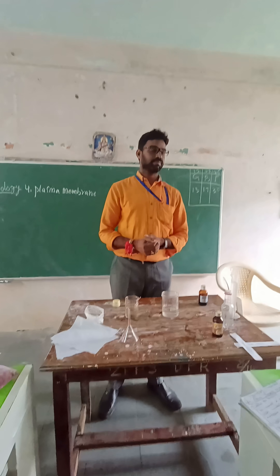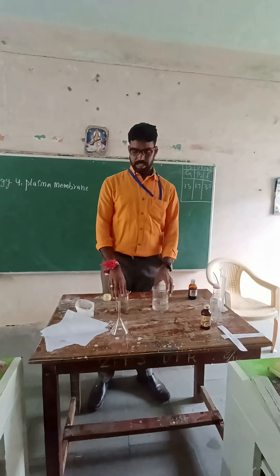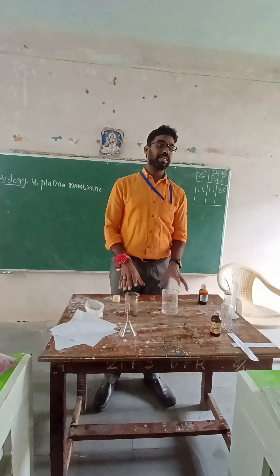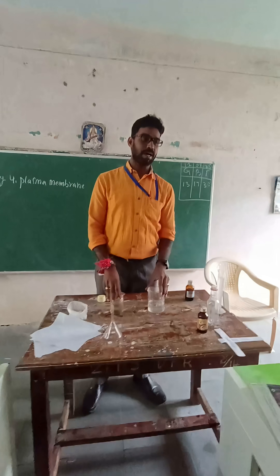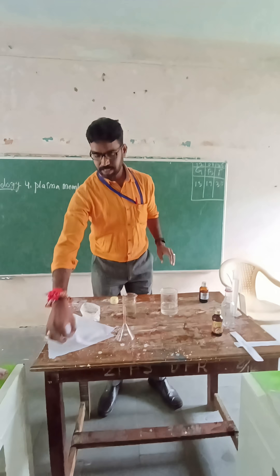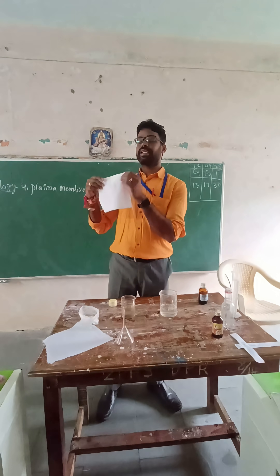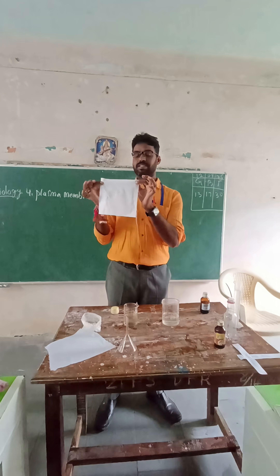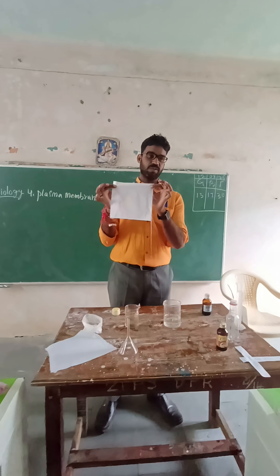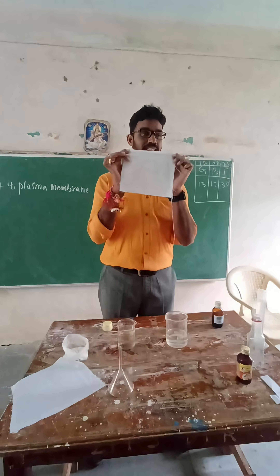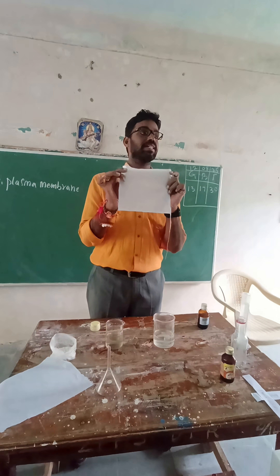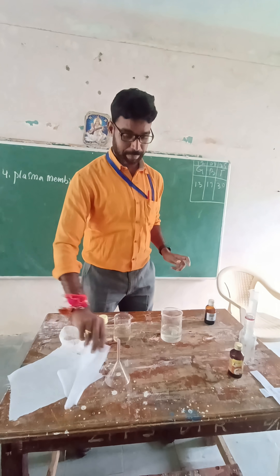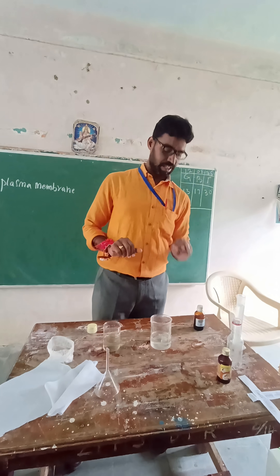In this activity, we learn about the selective permeability of the plasma membrane. The cotton cloth represents the plasma membrane. We want to find out which materials it allows to pass through and which materials it does not allow.